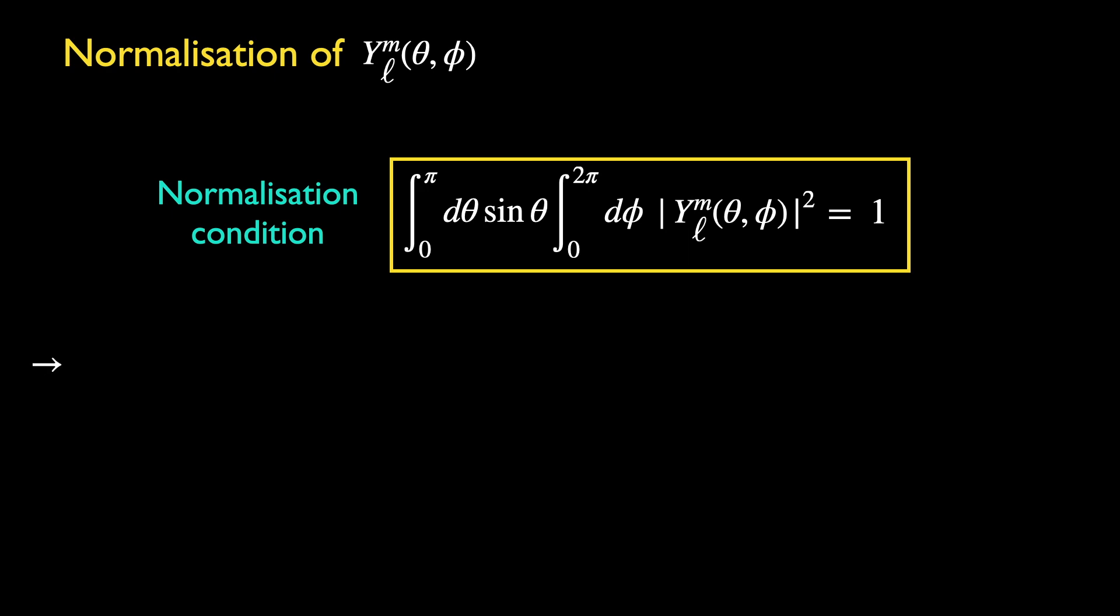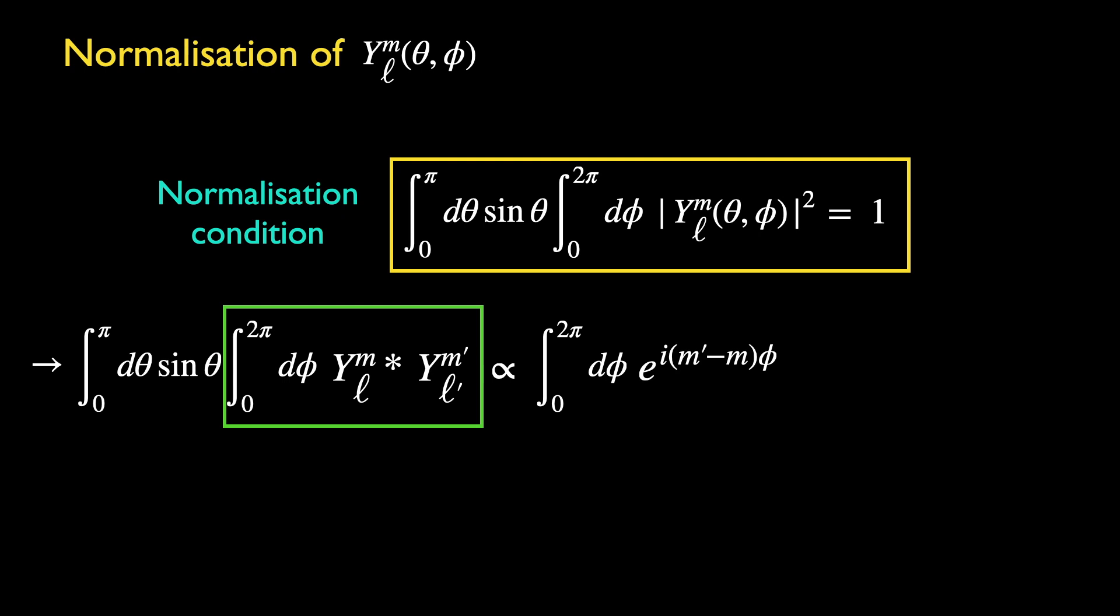A more general quantity would be the inner product of two arbitrary spherical harmonics. The integral over the angle phi is given by the following, with the integrand as the product of two eigenfunctions of L3. Since the difference between m and m' must be an integer, the result should be proportional to this Kronecker's delta. Because when m is not equal to m', the integrand is a harmonic function with period 2π. Integrating any such function over its period must necessarily give 0. Whereas if m equals m', then the integrand is just 1, and the integral is non-zero.